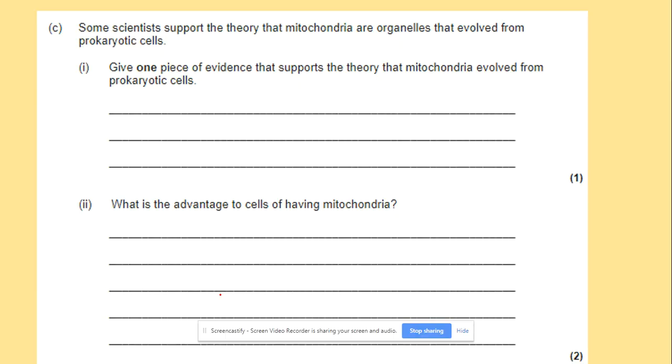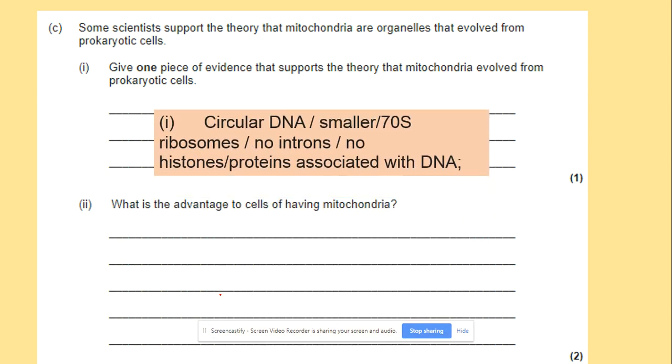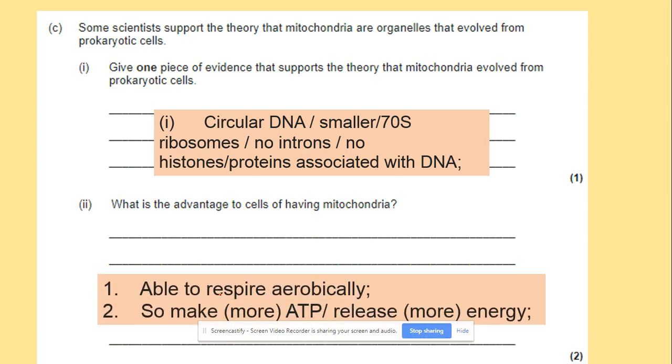So here are a few questions. Give a piece of evidence that supports the theory that mitochondria evolved from prokaryotic cells. What we need to remember is that mitochondria in human cells will have a small circular DNA and they also will have their own ribosomes. The DNA is not associated with histones and we don't have introns on those non-coding sequences. And what's the advantage? Why would mitochondria have those things? We need to think about the process that takes place in mitochondria, which is aerobic respiration. So able to respire aerobically to make ATP.